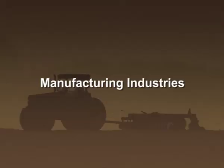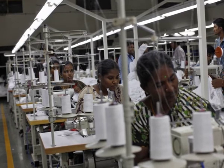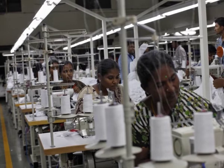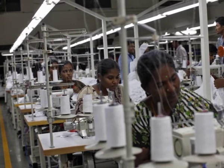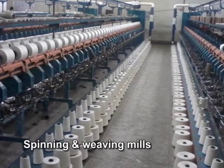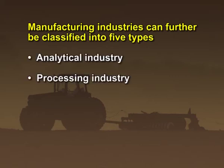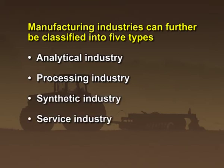Manufacturing industries are engaged in the conversion of raw materials or semi-finished goods produced in extractive industries. Prominent examples include cotton textile industry, spinning and weaving mills, etc. Manufacturing industries are further classified into five types: number one, analytical industry; number two, processing industry; number three, synthetic industry; number four, service industry; number five, assembly industry.